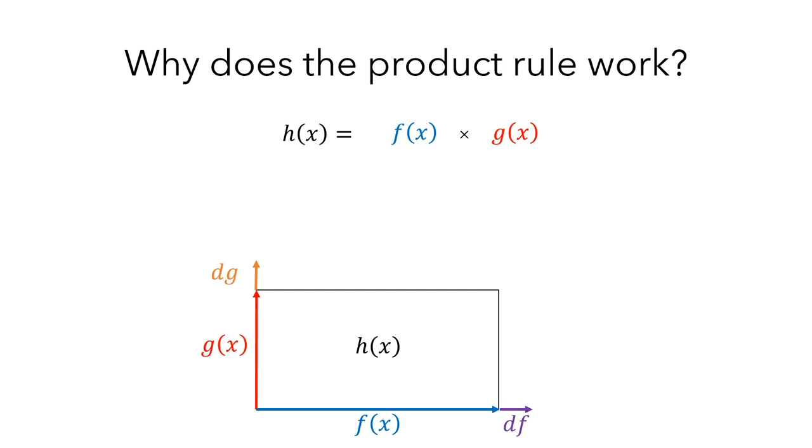Next, let's think about what happens to the area as we increase x by a tiny amount. As x increases, f changes by df, which creates a new rectangular region. Since df is really small, the area of this purple rectangle is also really small. Similarly, g changes by dg, and this creates another new rectangular region. Since dg is really small, the area of this brown rectangle is also small.